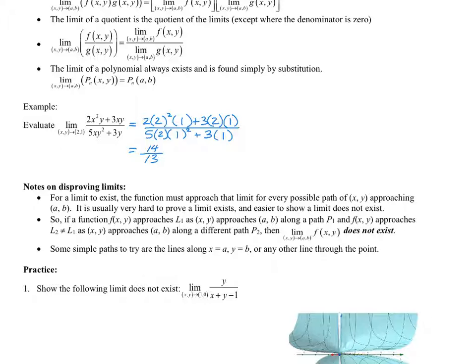When you're finding a limit as you're approaching a point, bear in mind that x and y is approaching 2, 1, and we're looking for a z. What we're getting as the result of the limit is the z value that the graph is approaching as you approach that x value of 2, y value of 1, from every possible direction — not just from the left, not just from the right, but from every single possible direction that you could approach a point in three dimensions.